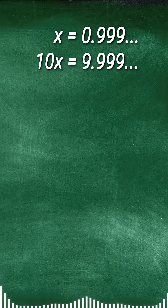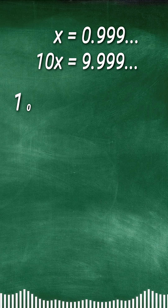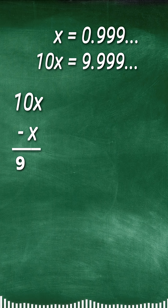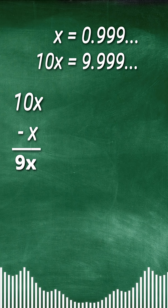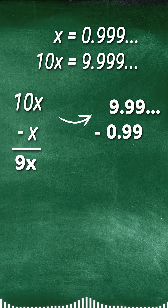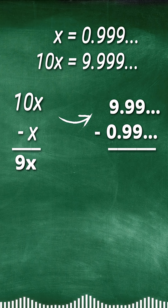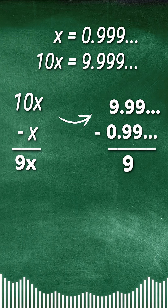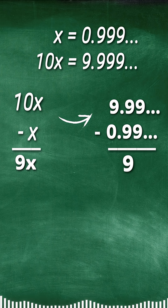From those two values, let's compute 10X minus X, which gives us 9X. Substituting their respective values: 9.9 repeating minus 0.9 repeating gives us 9.